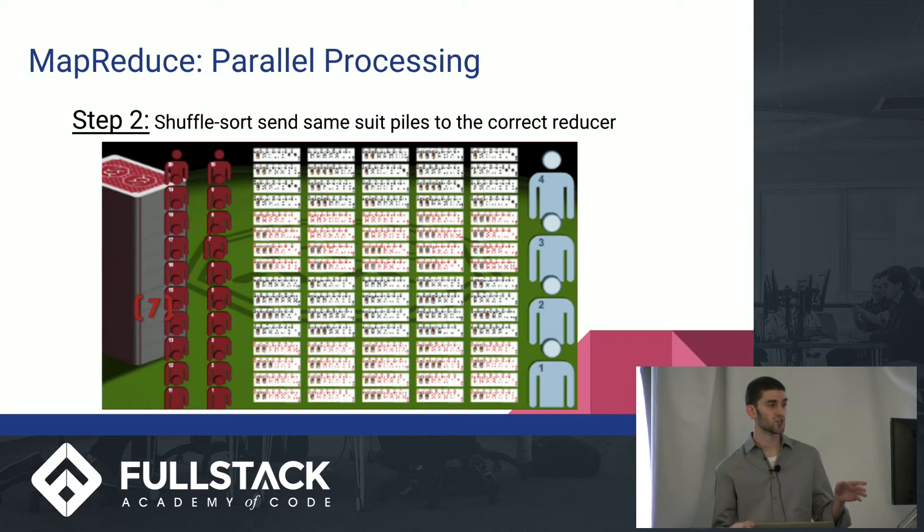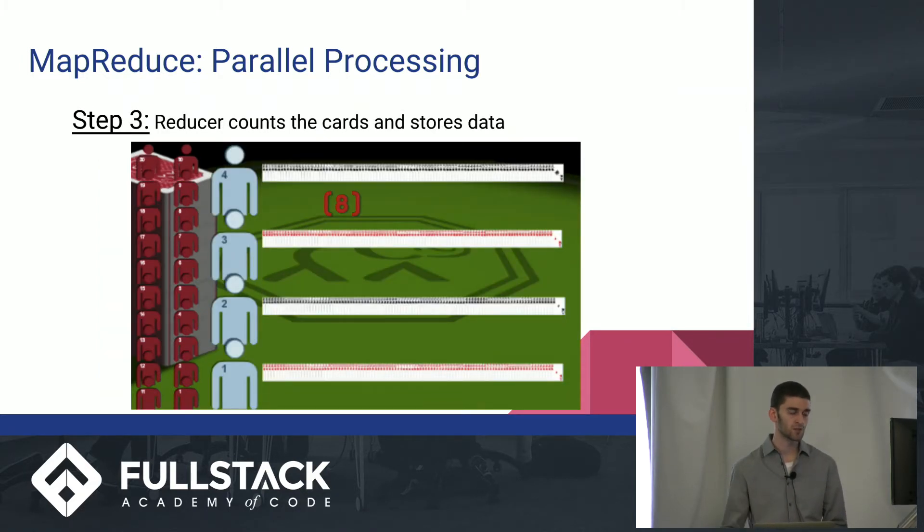All right. We have a lot of nodes. And the shuffle will just make sure that each reducer, as you can see on the right-hand side, is going to get all of the same suit. And then the last step, each reducer just counts all the cards. Pretty straightforward and easy to understand, I think.